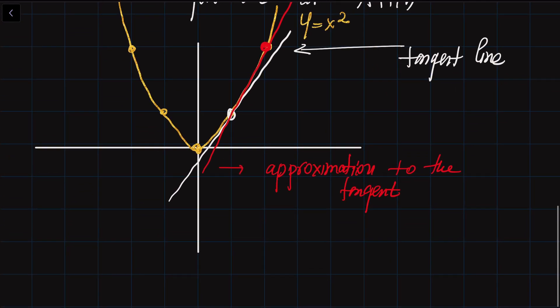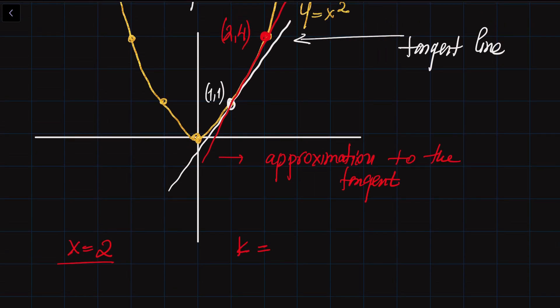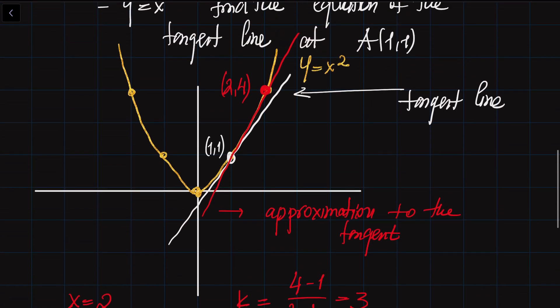The white point has coordinates (1, 1) — we need to find the equation of the tangent line there. The red point has coordinates (2, 4). So when X equals 2, the slope of the red line is going to be (4 minus 1) divided by (2 minus 1), which equals 3. Of course, this red line is not the same as the tangent line. To get a line even closer, we can choose a point on the curve closer to the white point. If X equals 1.5, the slope is (1.5 squared minus 1) divided by (1.5 minus 1), which is 2.25 divided by 0.5, equal to 2.5.